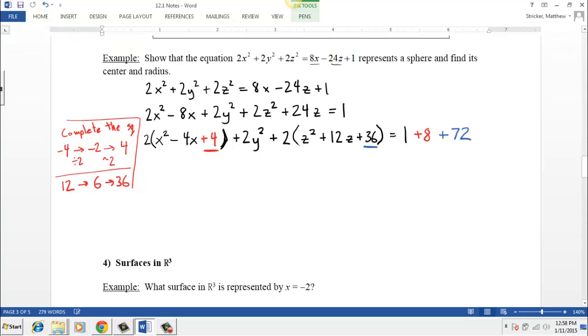Okay, so let's clean things up now. On the left-hand side, we have 2 times the quantity. Now, because it's a perfect square, we can now factor it. This is x minus 2 quantity squared. And we have plus 2y squared. And then again, with the z's we can factor. This is 2 times the quantity z plus 6 quantity squared equals 81.